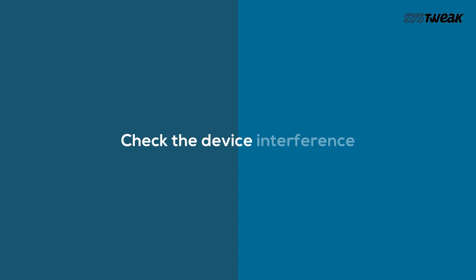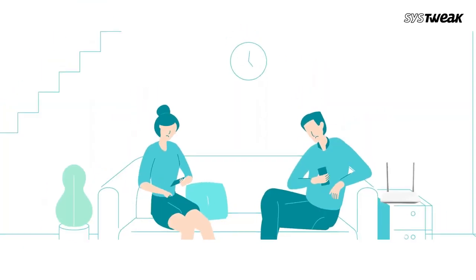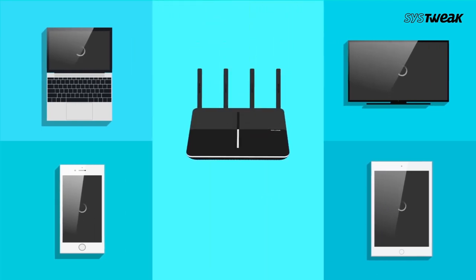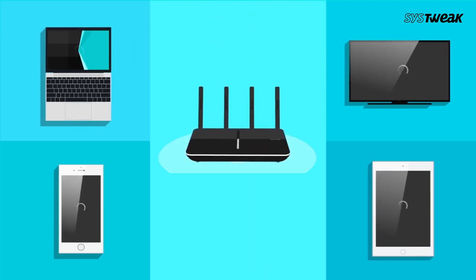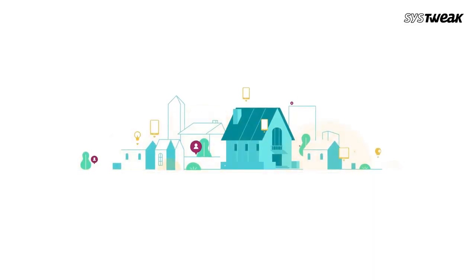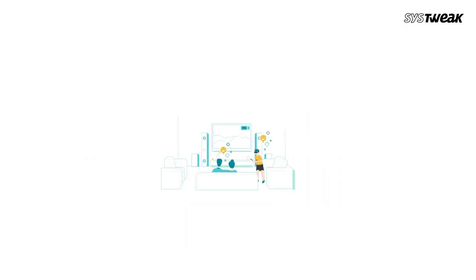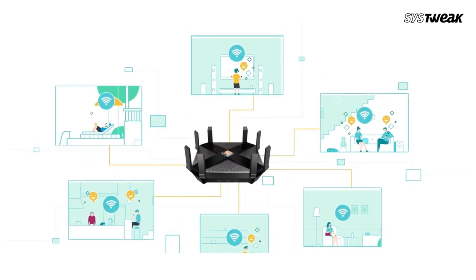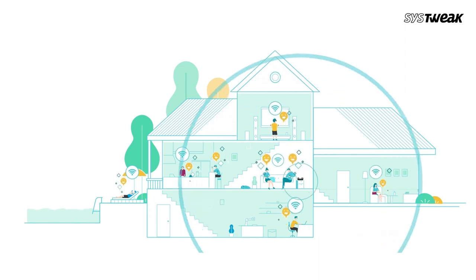Next, check for device interference. Wi-Fi signals can be interfered with by many household devices — believe it or not — such as cordless phones, microwave ovens, Bluetooth speakers, etc., because they use the same frequencies. So either bring the modem and router closer to your laptop, or switch off the cordless phone, microwave oven, Bluetooth speaker, etc.